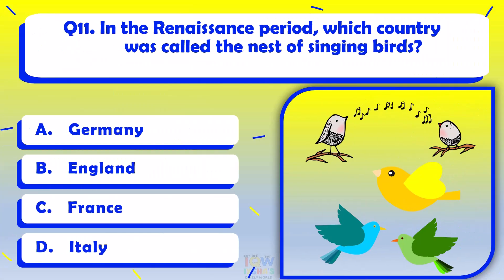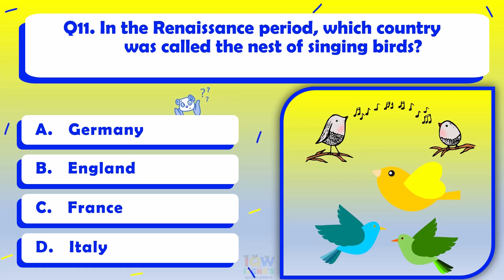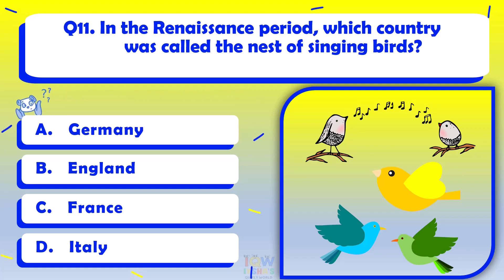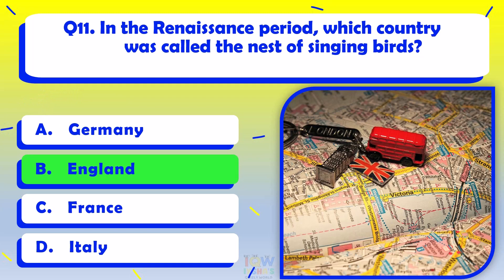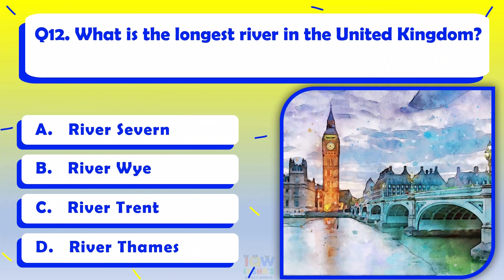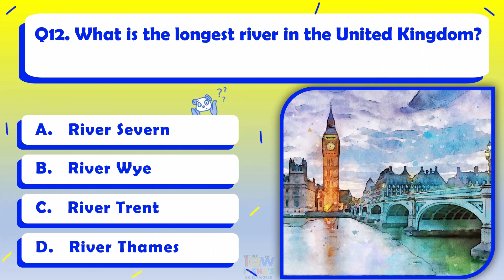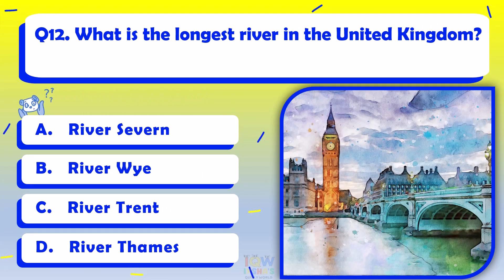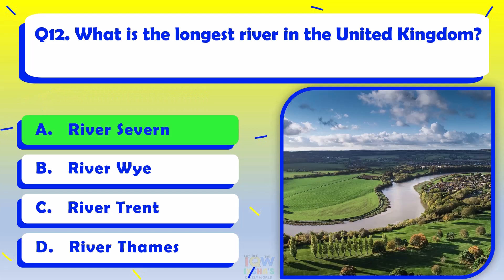In the Renaissance period, which country was called the Nest of Singing Birds? England. What is the longest river in the United Kingdom? River Severn.